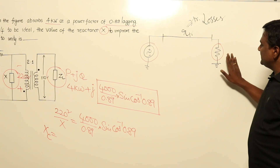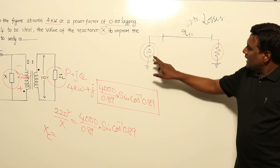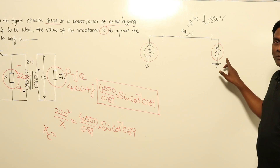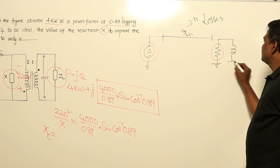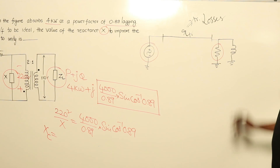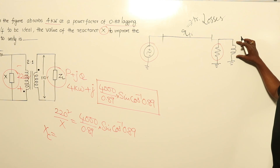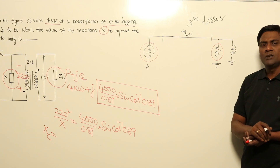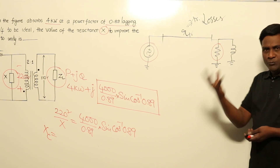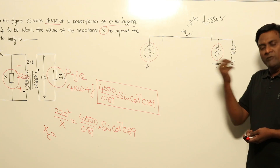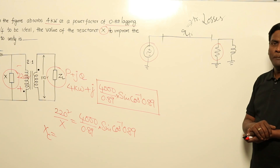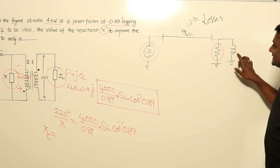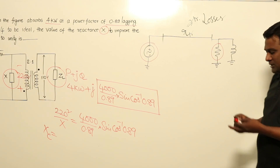The alternator is delivering active power and the load is absorbing it. Now if I connect one inductance in parallel, the inductance will not absorb any average power — average power absorbed by inductance is zero. The inductor will absorb power, store it, and give it back. So net active power absorbed or delivered by the inductor is zero. But is it increasing the transmission line current?